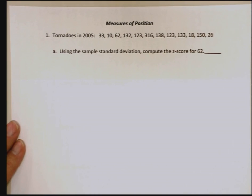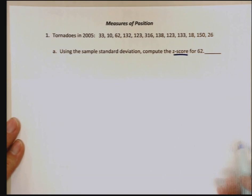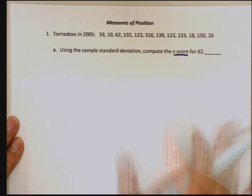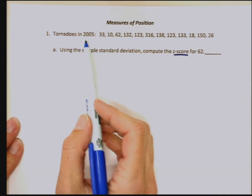In this video, we're going to look at measures of position, starting with z-scores and also percentiles. The first question gives us the number of tornadoes in the country in 2005.